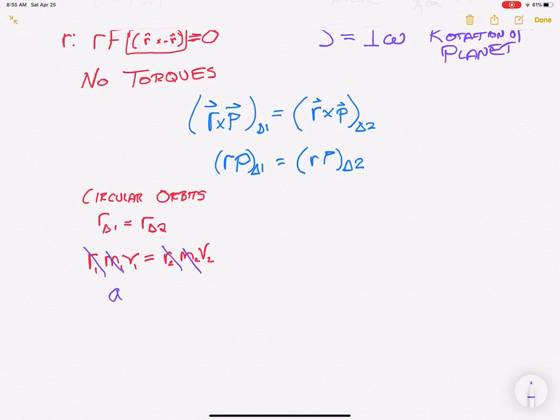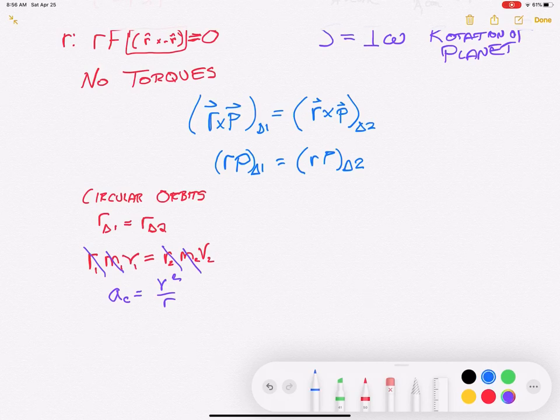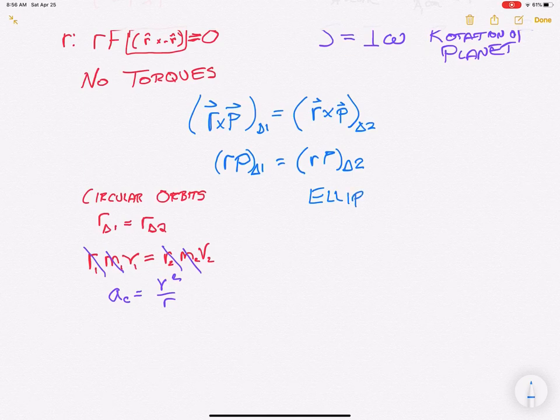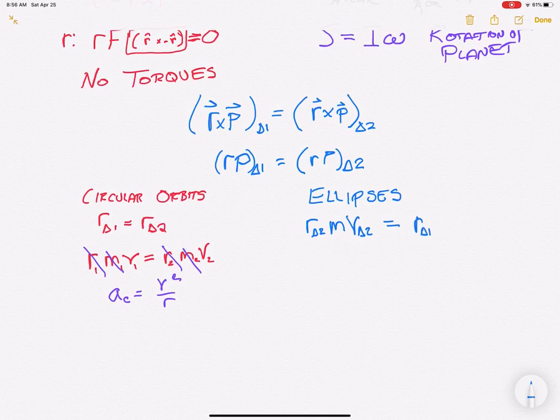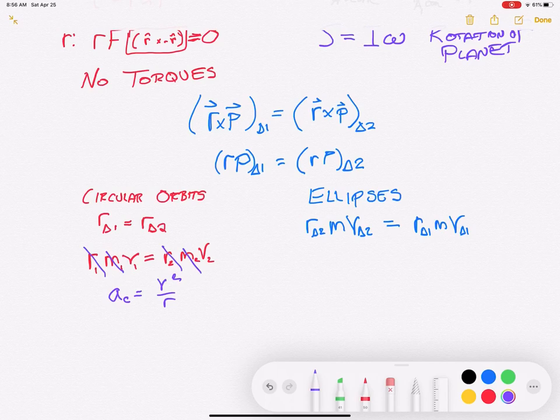We're also going to be able to find that there's going to be a centripetal acceleration equal to v squared over r. All right, so let's not do circular orbits. Let's get back on the main track and talk about ellipses, just in the most briefest sense. In this case, as a ratio, that the distance over a time interval 2 and mass velocity over object 2 has to equal r delta 1 mass delta 1. There's no reason why I flipped different sides of the axis. Anyways, for ellipses, the mass is again going to cancel out.